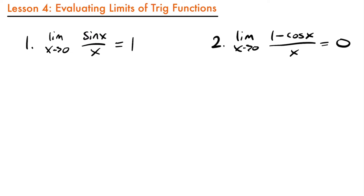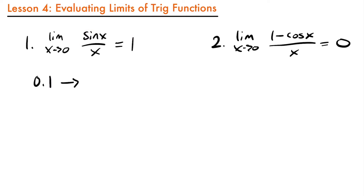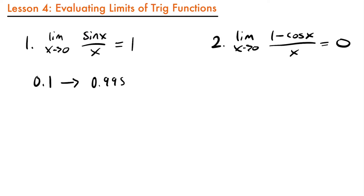The reason we have to do that in the first place is because if you plug in 0 into these functions, you get an undefined value because of that x in the denominator. So if I plug in 0.1 as my value of x into sine x over x, I get 0.99833 — using a calculator, of course.